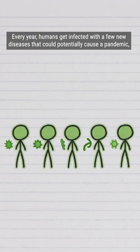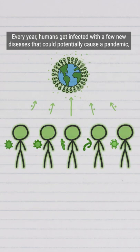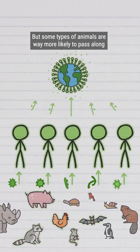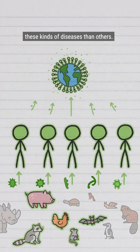Every year, humans get infected with a few new diseases that could potentially cause a pandemic. Most of these new diseases come from animals, but some types of animals are way more likely to pass along these kinds of diseases than others.